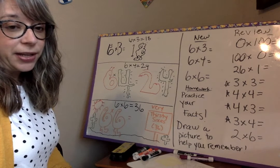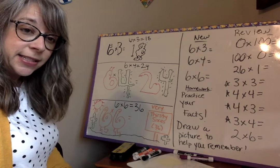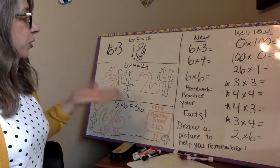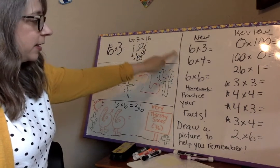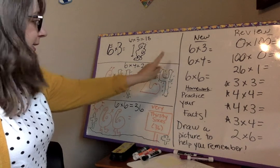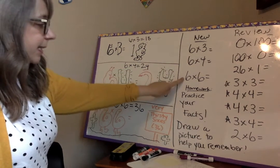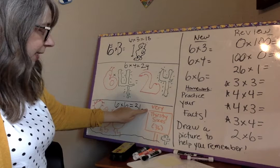So, this is our continuation of our math lesson. Our new information is 6 times 3 is 18, 6 times 4 is 24, and 6 times 6 is 36.